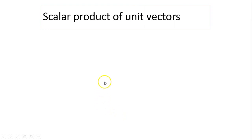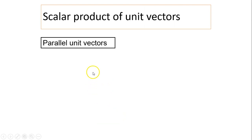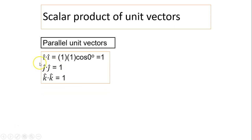Scalar product of unit vectors. Unit vectors have a magnitude of 1 and their only job is pointing in a direction. We have special unit vectors i, j, and k. For parallel unit vectors: i dot i equals 1 times 1 times cosine 0 degrees, which equals 1. Similarly, j dot j equals 1 and k dot k equals 1.